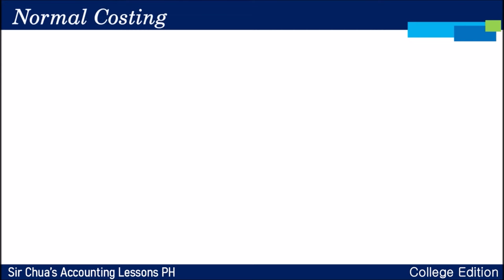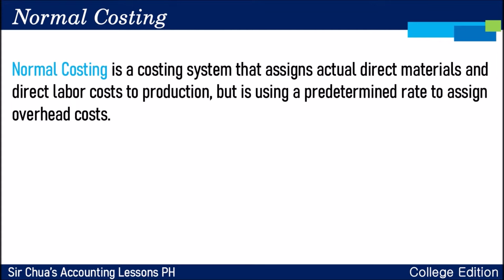Okay, let's start our lesson. I mentioned in the last lesson that accounting for materials would be Lecture 4, but I think it's better to teach normal costing more extensively before we dig deeper into materials, labor, and overhead. So we proceed now to normal costing. A normal costing system is a costing system that assigns actual direct materials and direct labor to production but uses a predetermined rate to assign overhead cost.